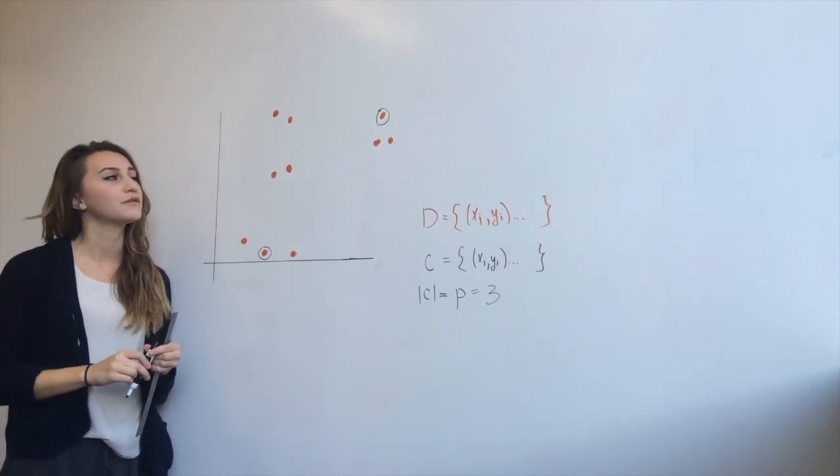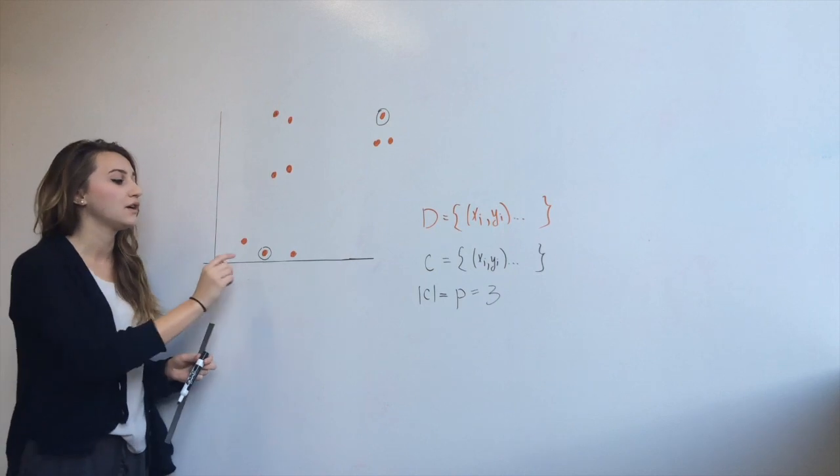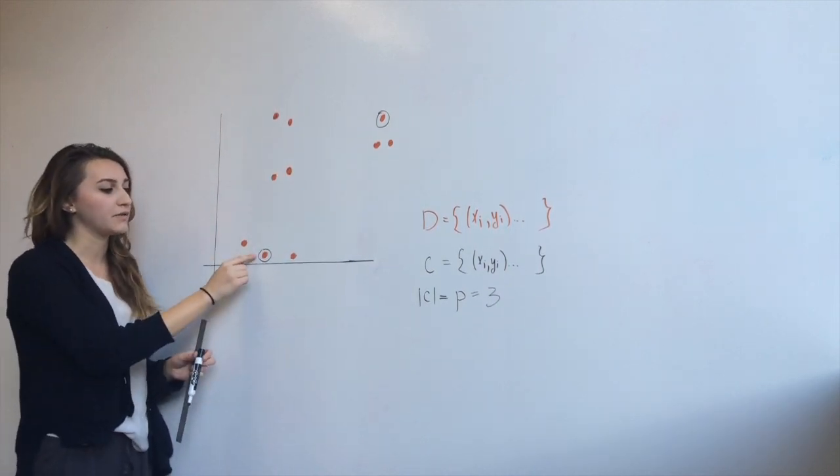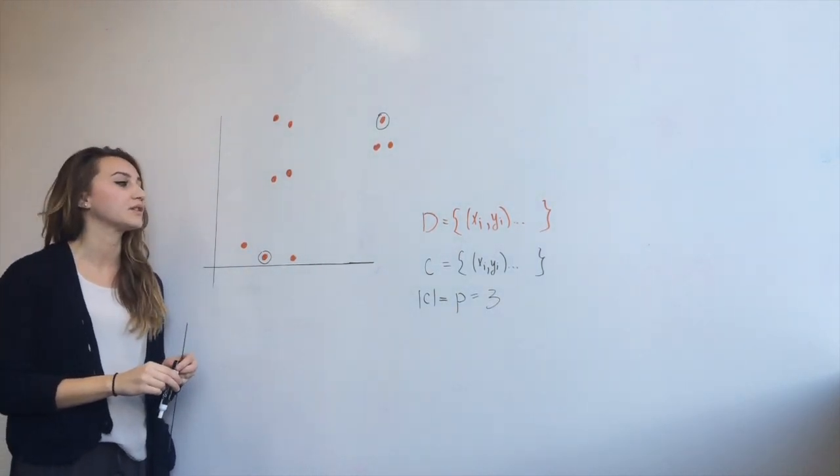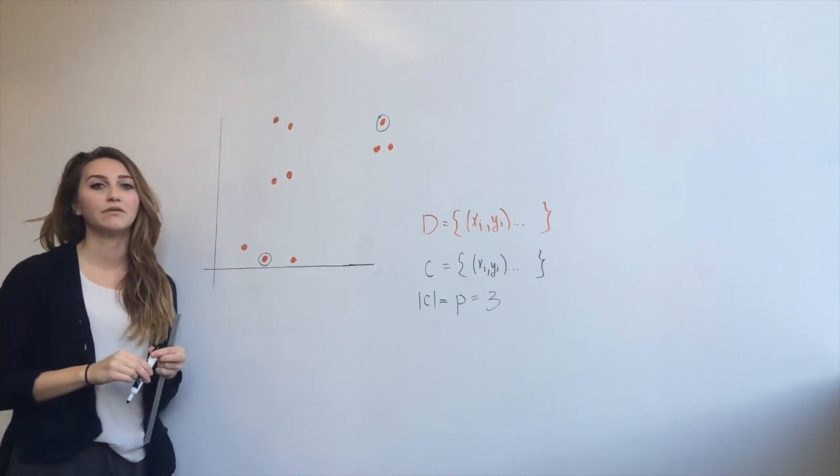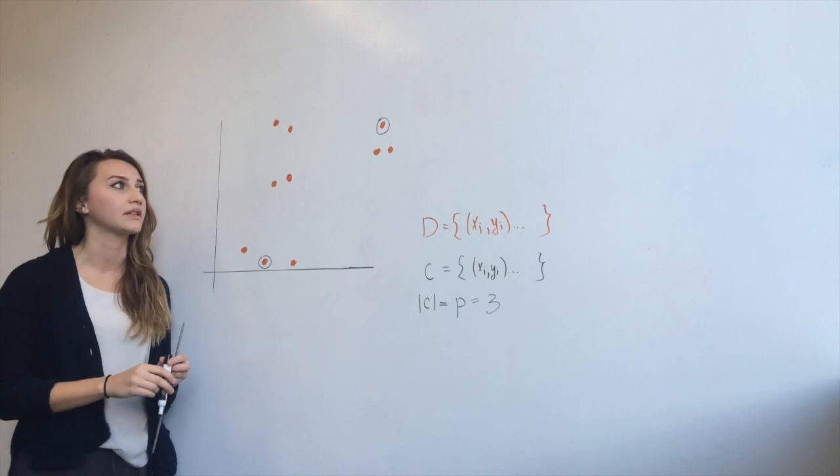The next step is to traverse the remaining n-2 points and find the distance from the two centers you've already selected. You would go from this point to all the remaining points, get the distance from the center to the points, and do the same for this center right here. After that, you would run through and find out which point had the maximal combined distance from the two centers.